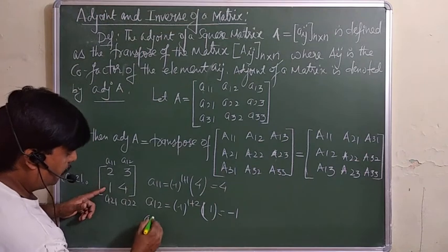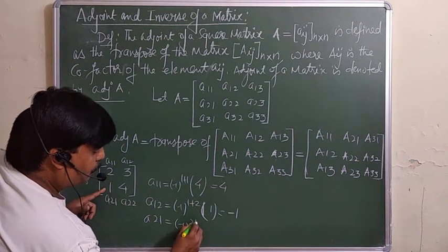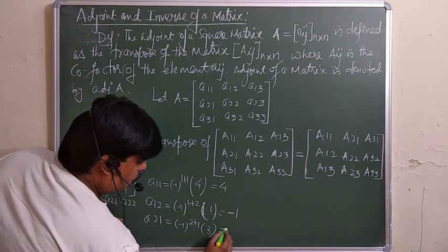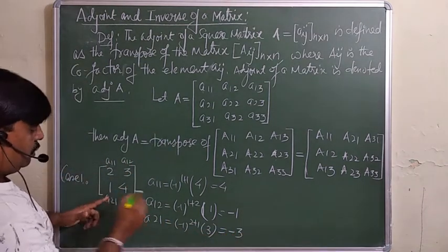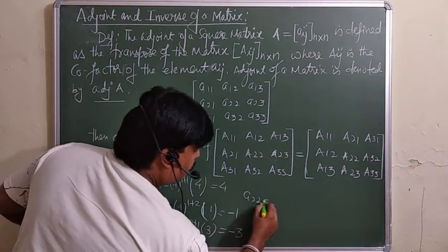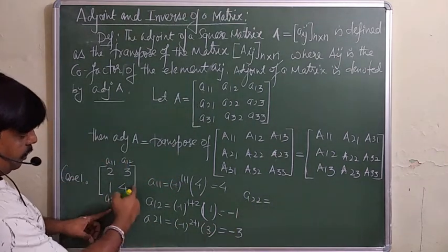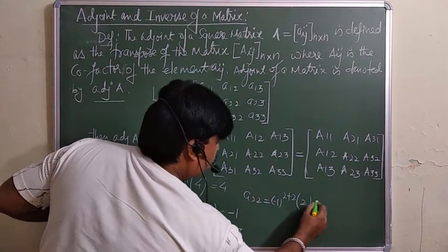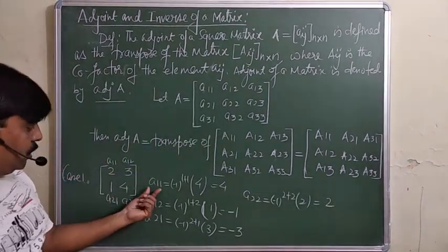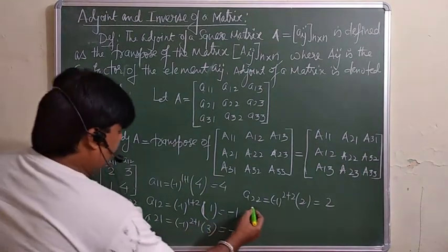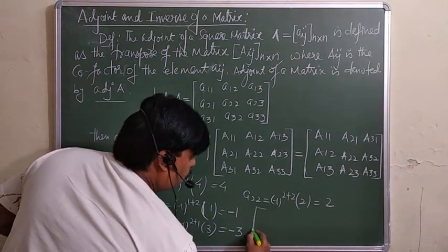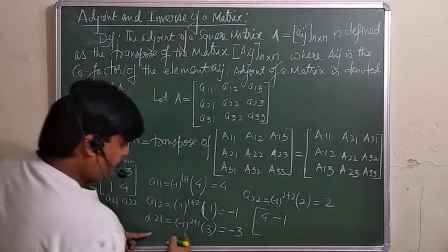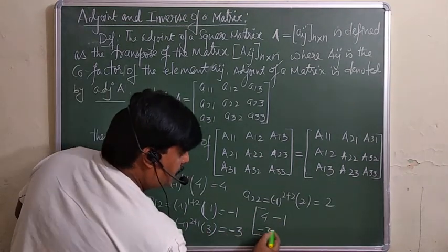For A_21 (second row, first column): (−1)^(2+1) times 3 gives −3. For A_22 (second row, second column): (−1)^(2+2) times 2 gives 2. So the cofactor matrix is [4, −1; −3, 2].